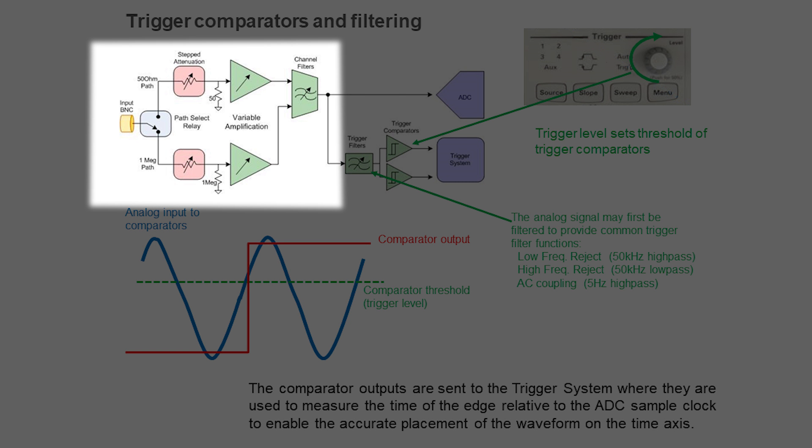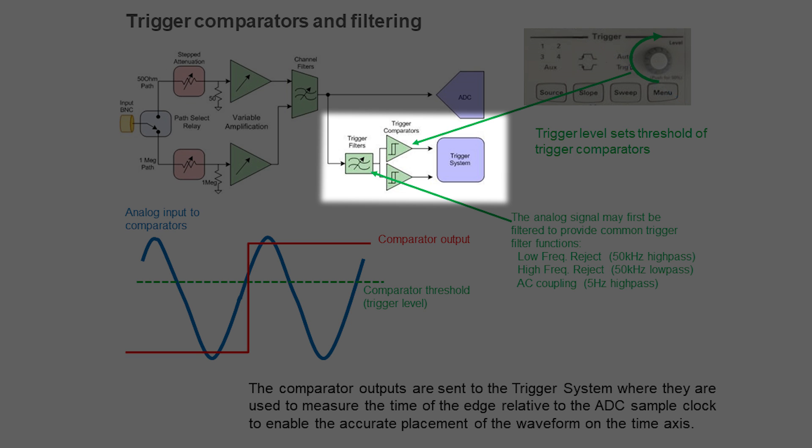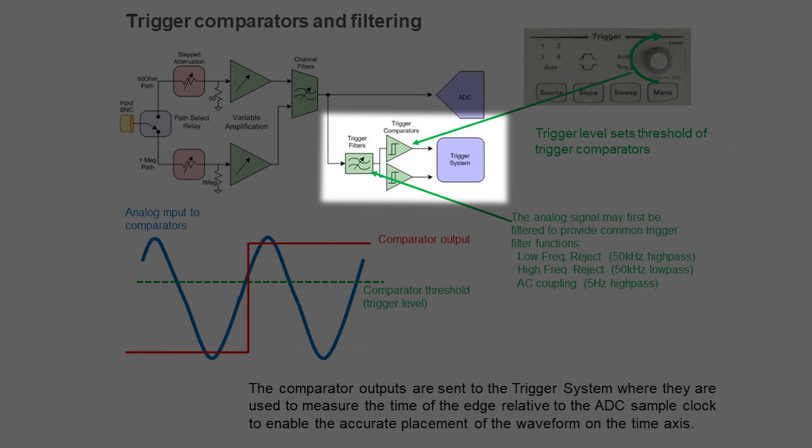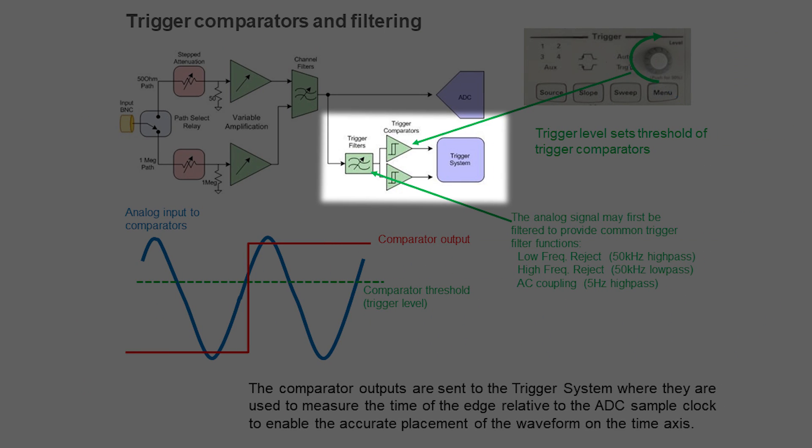You could also use the on-screen frequency measurement, but the frequency counter is actually a better fit here because it uses the scope's trigger circuitry. And here's where it gets really interesting. The trigger circuitry and signal path is actually separate from the acquisition path.